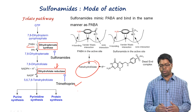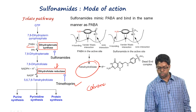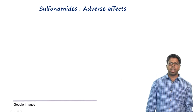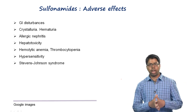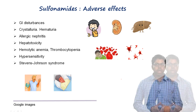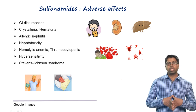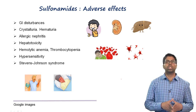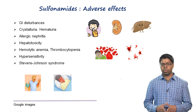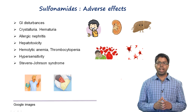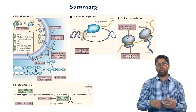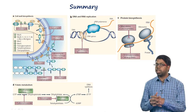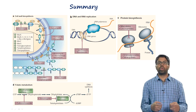The sulfonamide in the cotrimoxazole combination is sulfamethoxazole. Side effects of sulfonamides include gastrointestinal disturbances, crystalluria, hematuria, hepatotoxicity, and hypersensitivity reactions ranging from rash and hives to anaphylaxis and Stevens-Johnson syndrome — a rare, severe condition affecting the skin and mucous membranes. In summary, antibiotics target cell wall biosynthesis, nucleic acid biosynthesis, protein biosynthesis, or metabolic pathways.